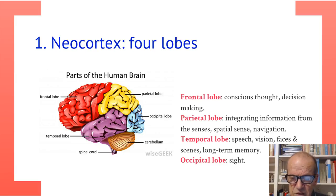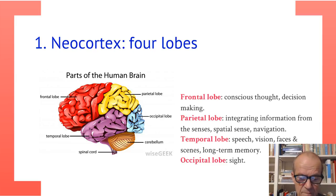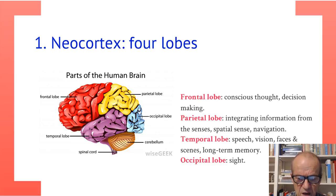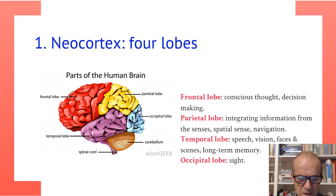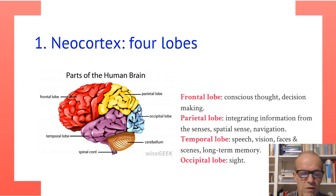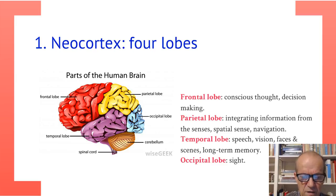The various lobes have different functions. The frontal lobe is important for conscious thought and decision making. The parietal lobe is for integrating information from the senses, for spatial sense and navigation. The temporal lobes are for speech, vision, faces, and complex information processing and long-term memory. The occipital lobe is for sight. These are very gross demarcations of the functions of the neocortex, but they give a basic idea of where things happen.